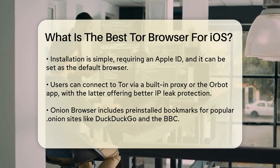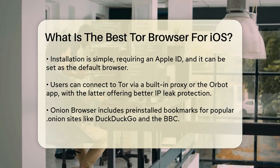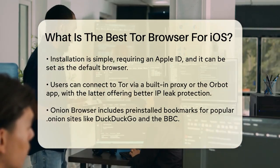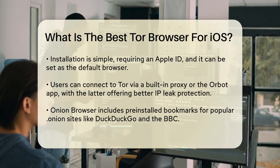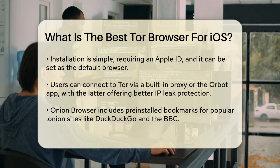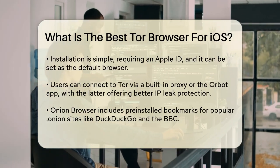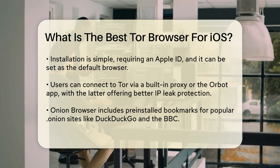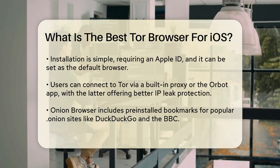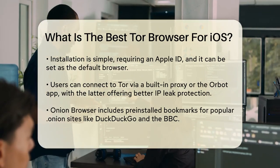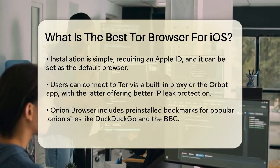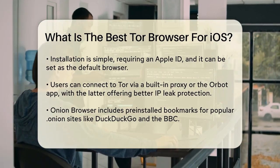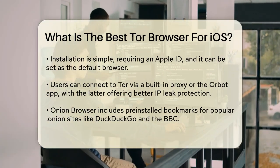When you first open Onion Browser, you have two options to connect to Tor: using the built-in Tor network proxy or the Orbot app. The built-in option is quicker and easier, allowing you to use Tor alongside another VPN if needed. However, the Orbot app provides more robust protections against IP address leaks, which is why it's the official recommendation from both the Tor project and the browser's developers.